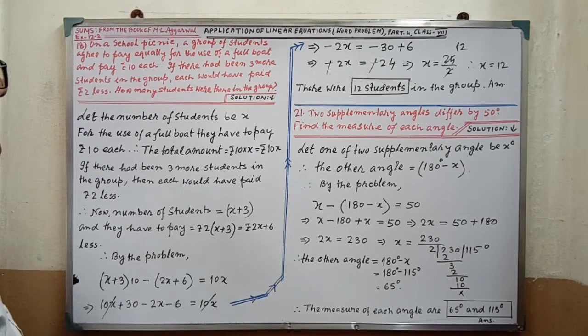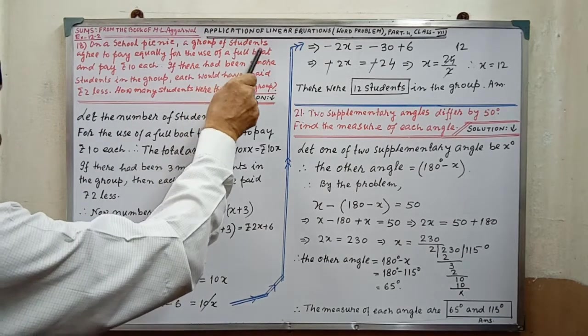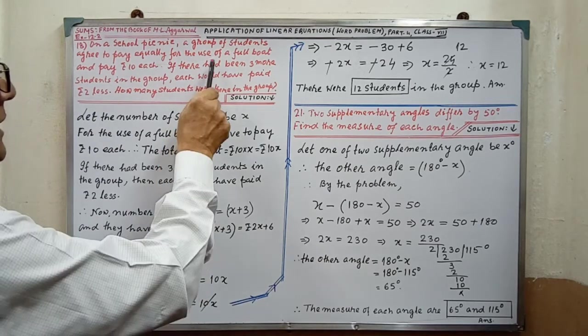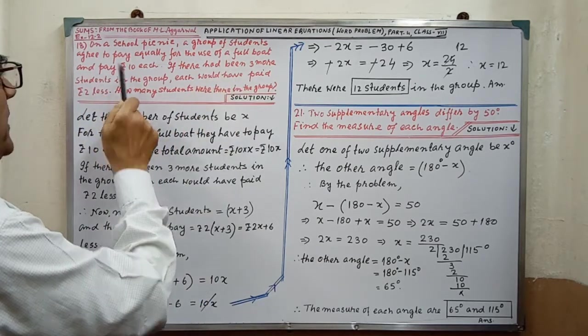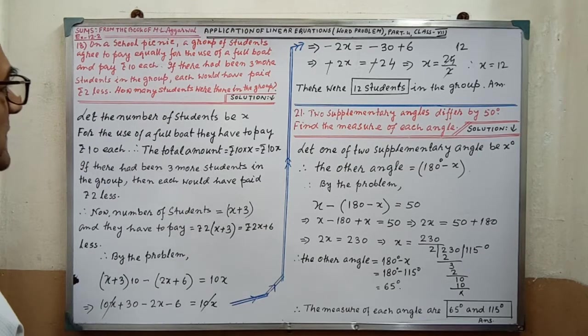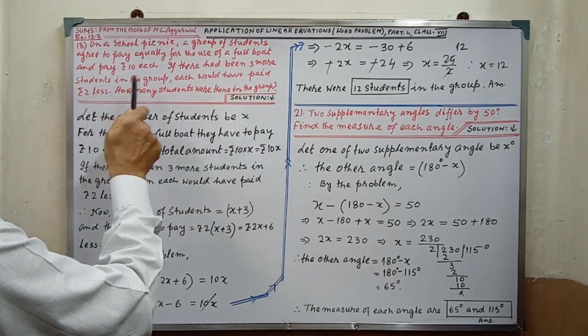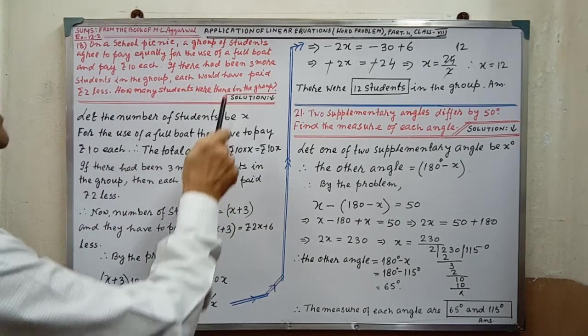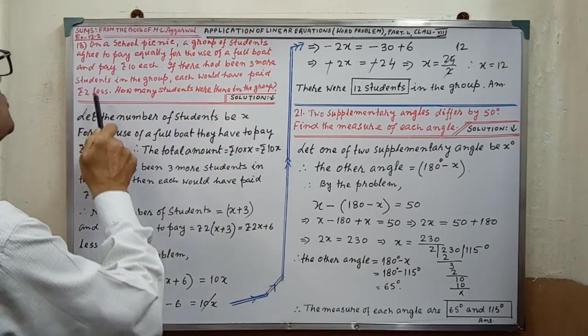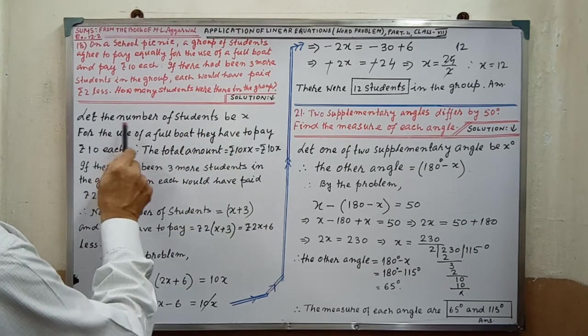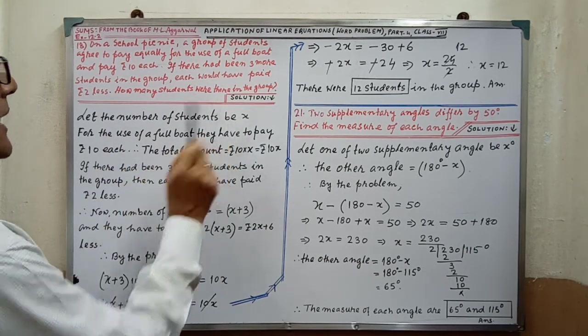On a school picnic, a group of students agreed to pay equally for the use of a full boat and pay rupees 10 each. If there had been 3 more students in the group, each would have paid rupees 2 less. How many students were there in the group? Let the number of students be x.